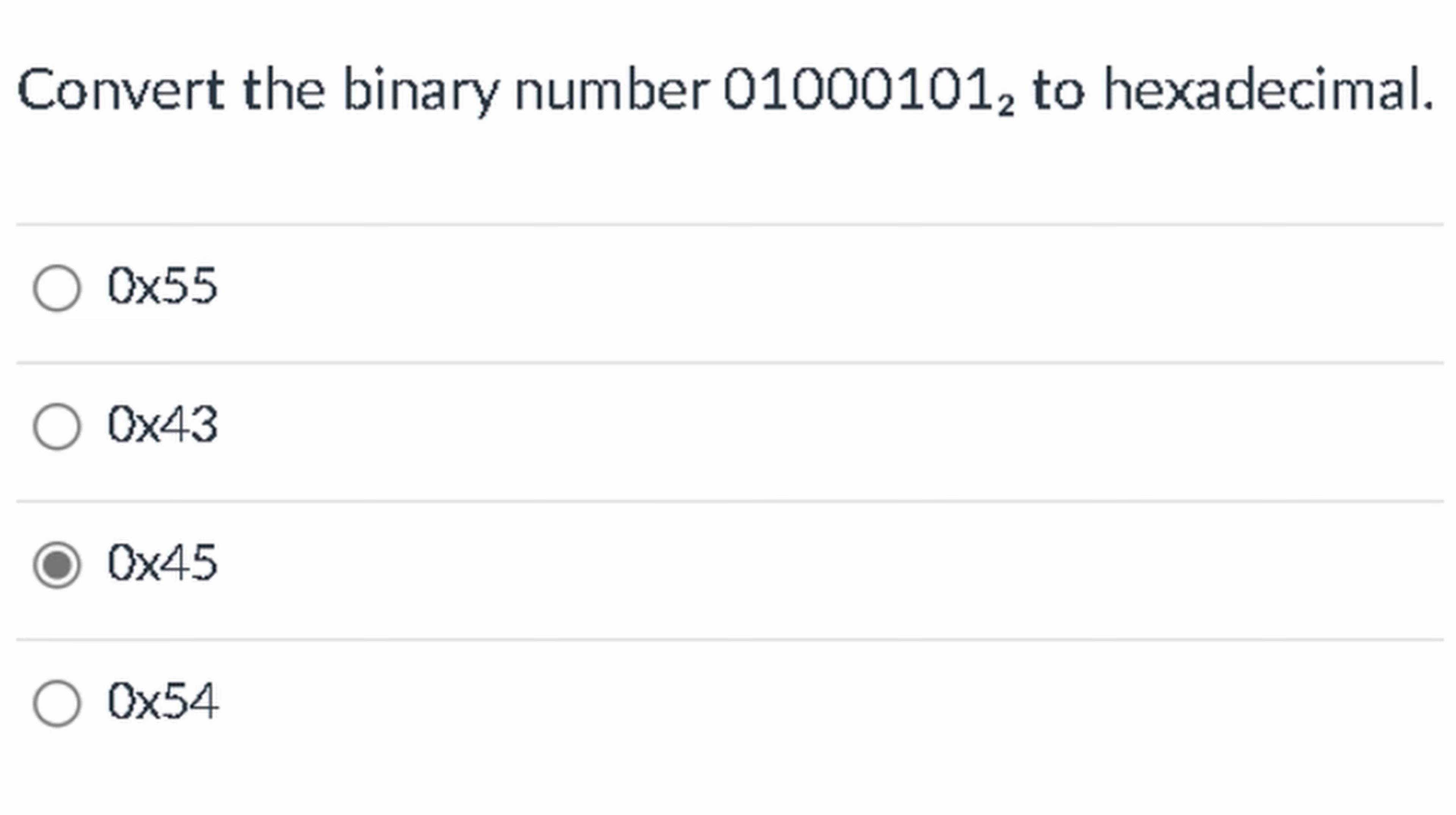We're going to be converting the binary number to hexadecimal. This is how we would do any binary number to hexadecimal conversion. First, we have to make note of the base. Hexadecimal is base 16, binary is base 2, hence this 2 right here.